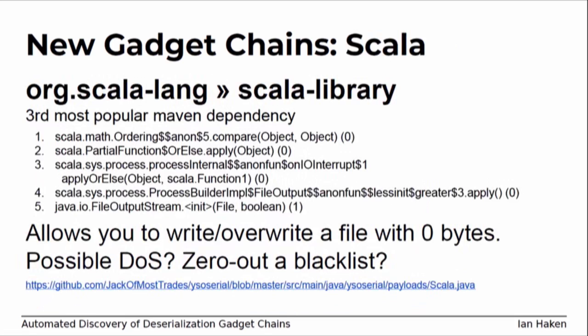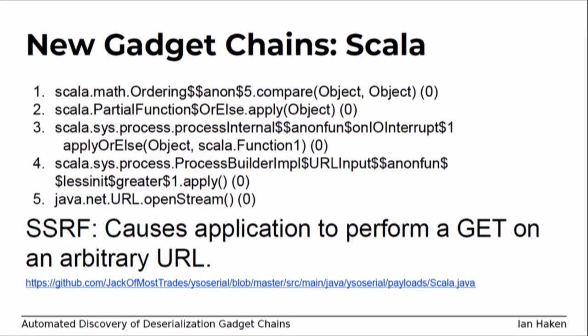More recently I discovered some new gadget chains in Scala using this tool. Scala is the third most popular dependency according to mavenrepository.com. This gadget chain isn't an RCE, but it allows you to write or overwrite a zero-byte file on disk — an interesting DOS exploit, since you can overwrite some application resource file, zero it out, and your app goes down. There's a very similar one that Gadget Inspector also found that can do an SSRF — it does a GET at an arbitrary URL. I've got examples of the actual payload on my fork of YSO Serial, and I did verify that these things actually work.